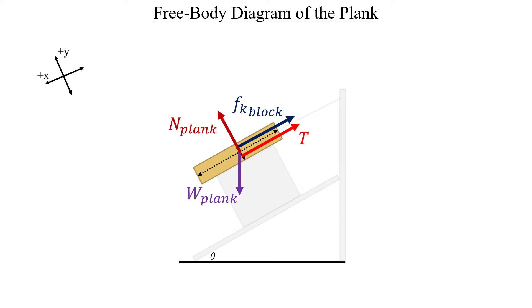Finally, we decompose this tiny little weight vector, like we did with the block before. I'll insert the angle in here, and out pops our cosine and sine components. So, now the free-body diagrams are done.